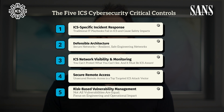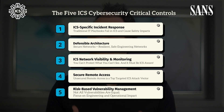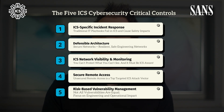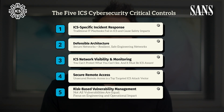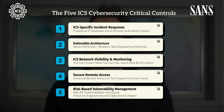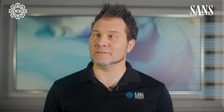Number three: ICS network visibility and monitoring — you can't protect what you can't see, and it must be ICS-aware. Number four: ICS secure remote access — unsecured remote access is a top targeted ICS vector. Number five: risk-based vulnerability management — not all vulnerabilities are equal; we need to focus on engineering and operational impact.